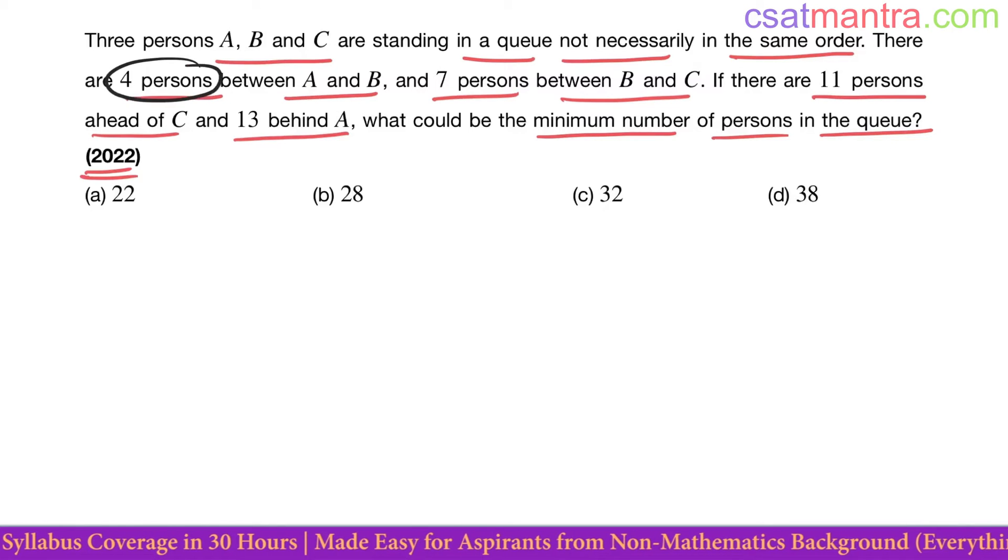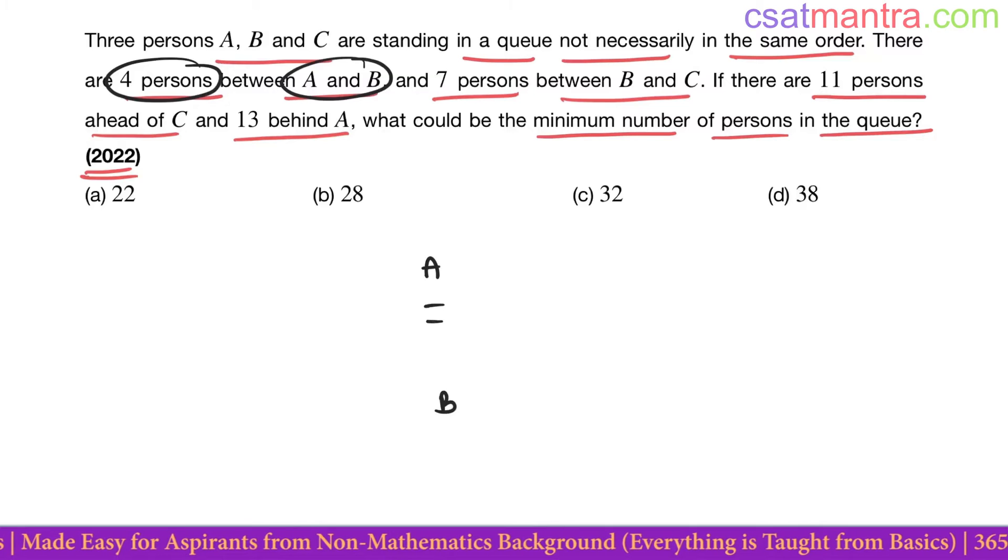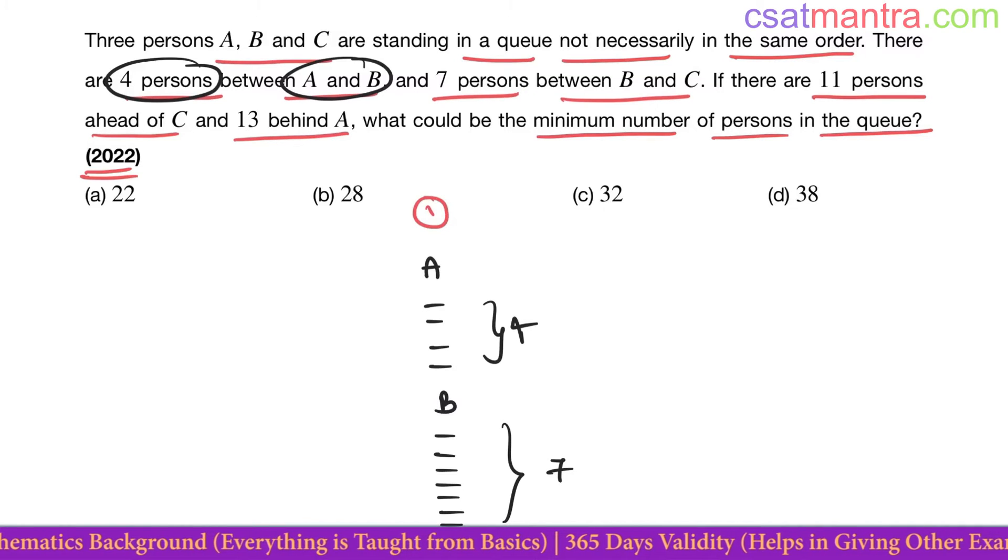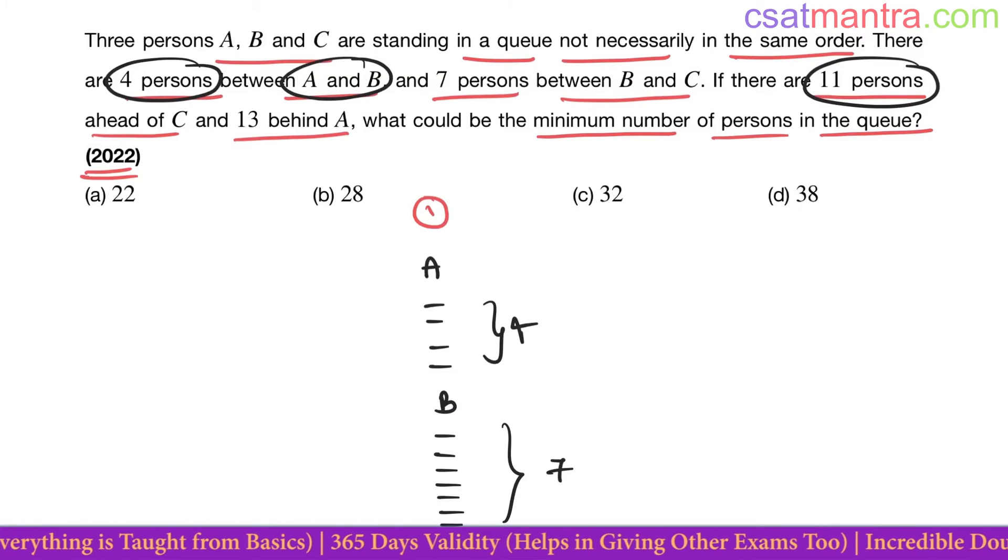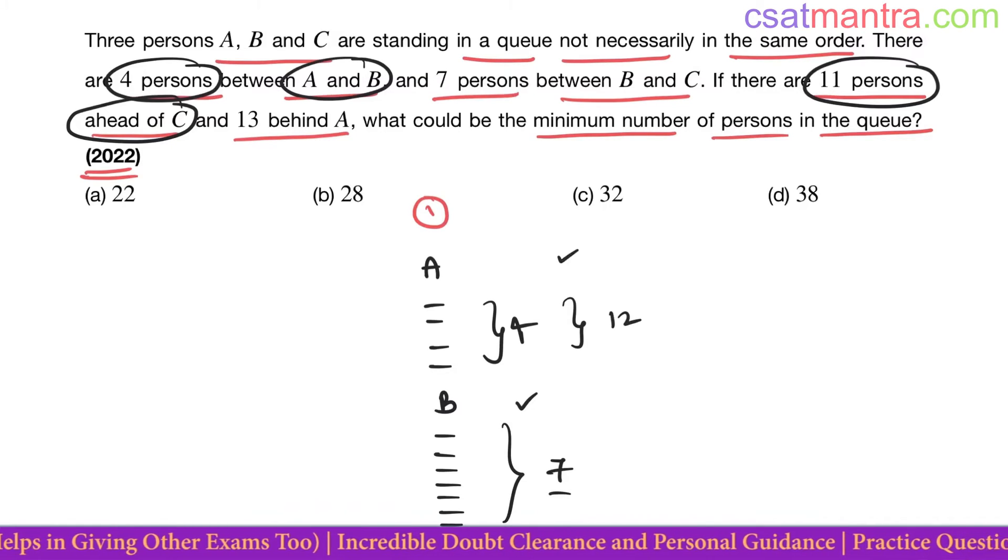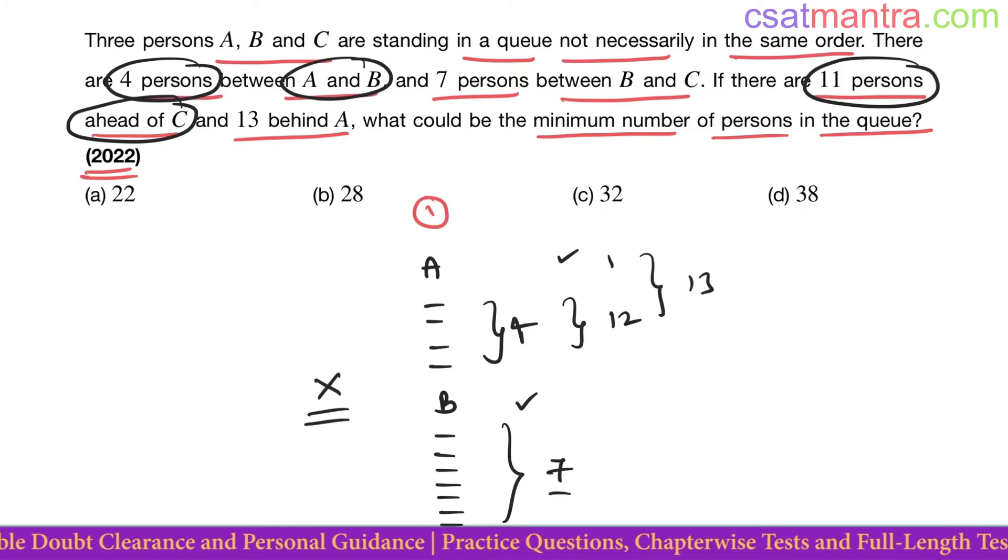There are four persons between A and B. We have A here, B here, between them there are four persons. Seven persons between B and C, this is one possibility. Now if there are 11 persons ahead of C, there should be 11 persons only ahead of C. Here we have 7, 1, 8, 8 plus 4, 12, A one, total 13. But we need to have 11 only, so this cannot be our possibility.